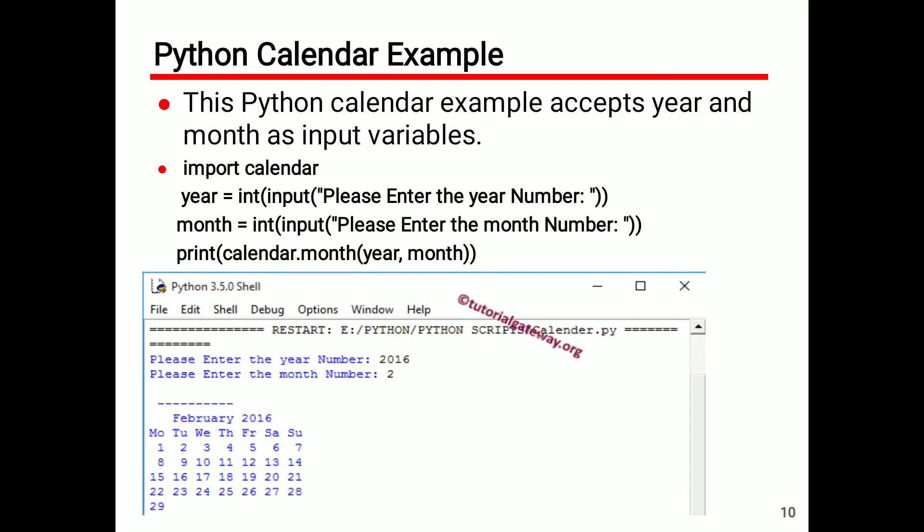When executed, it asks for the year number. We enter 2016 as the year. Then it asks for the month number. We enter 2. Simply it displays the second month of the calendar — February 2016.